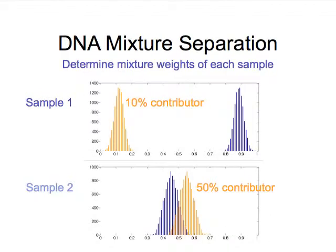The computer can look at all 15 STR loci and mathematically separate those out, determining the mixture weights. Mixture weight is both a mean and a standard deviation — there's uncertainty in science. We get about a 10% mixture. This orange component is the one we're going to be interested in, as well as a major component. And in the second sample, it's about a 50-50 mixture.